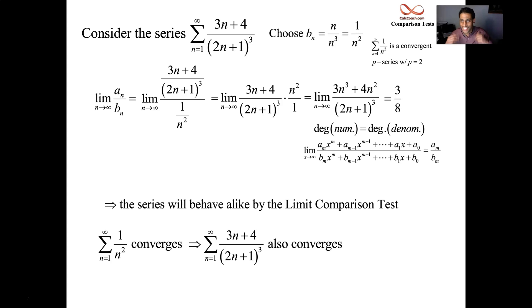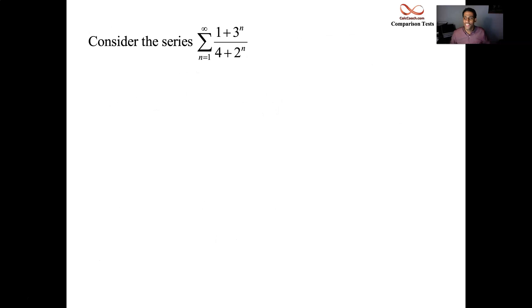Limit comparison test. Let's see it used on one final example. This is going to be a little bit tough algebraically. 1 plus 3 to the n over 4 plus 2 to the n. We can just look at it and see that, who cares about plus 1? Who cares about plus 4 as n goes to infinity? This should behave like 3 to the n over 2 to the n, which is like 3 halves to the n. And that's divergent geometric series. The ratio is bigger than 1 in absolute value. But the limit is kind of tough to figure out. We're going to multiply by the reciprocal and we're going to distribute that in.